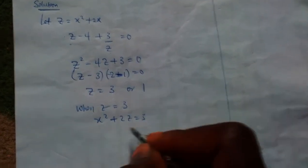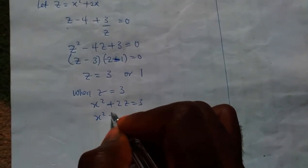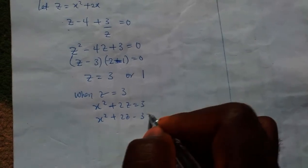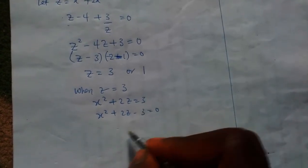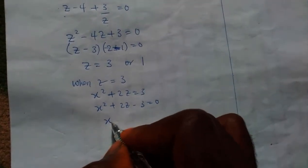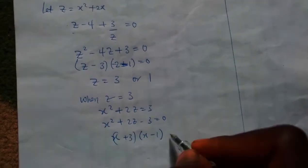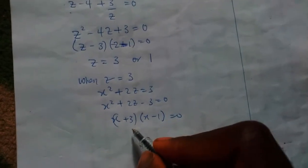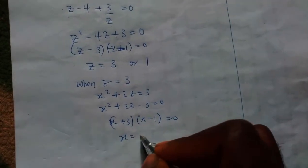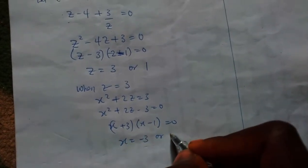In which case, this now becomes x plus 3 and x minus 1 equals zero when I find the common factors. So my x is minus 3 or my x is 1.